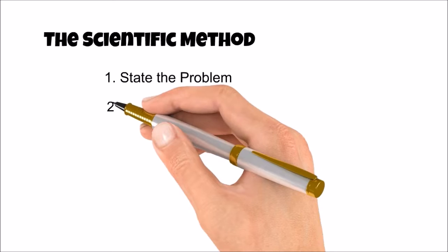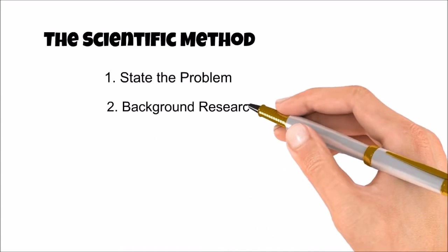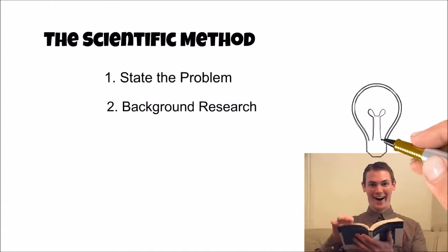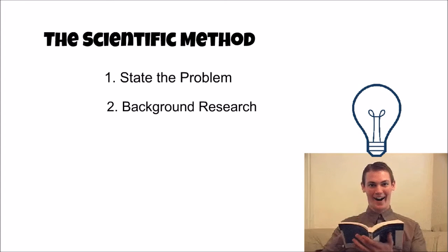Once a question of study has been determined, background research on the problem should be performed. This step helps educate the scientists about the problem and also helps determine if there is already an answer to the problem question. If no answer can be determined from the background research,